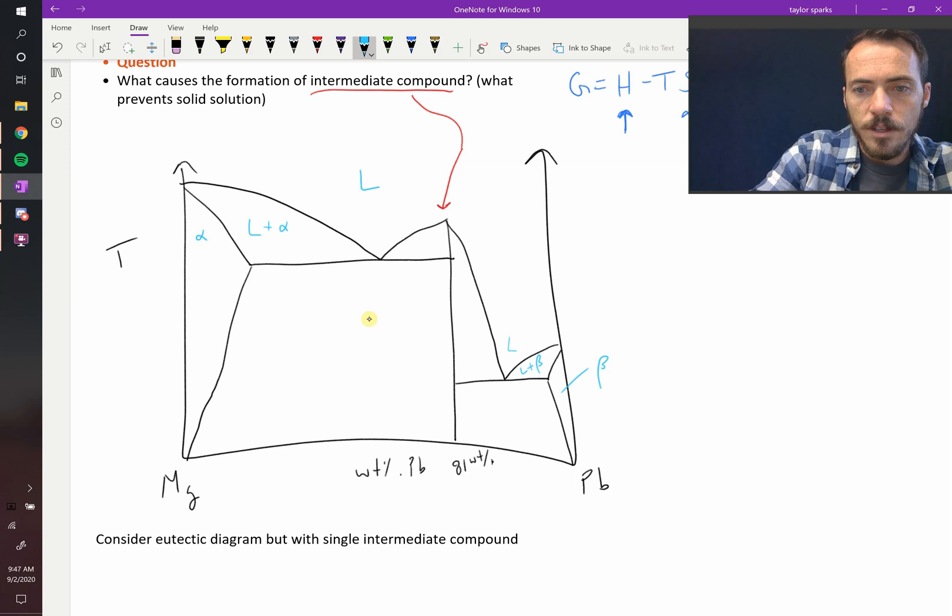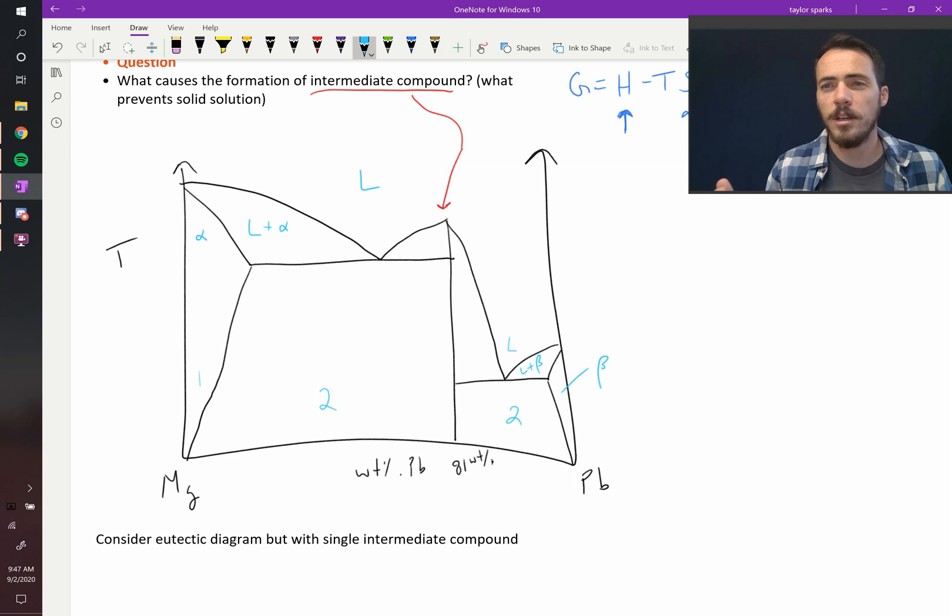This is liquid still. So we now need a new phase. If this is beta, so that's a single phase, this must be a two phase. But this is a one phase, so this must be a two phase. Take a look at this. Is this problematic? It looks like it goes 1, 2, 2, 1. So what's happening here? We have what's called a line compound.